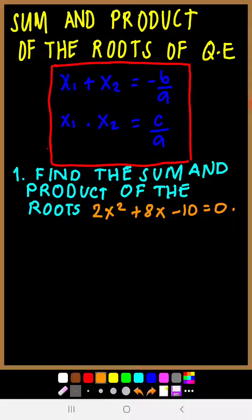So when do we use this? For example, this example problem number 1: find the sum and product of the roots of the quadratic equation 2x squared plus 8x minus 10 equals 0. First step, since we need the values of a, b, and c, we have to make sure that the quadratic equation is in standard form.